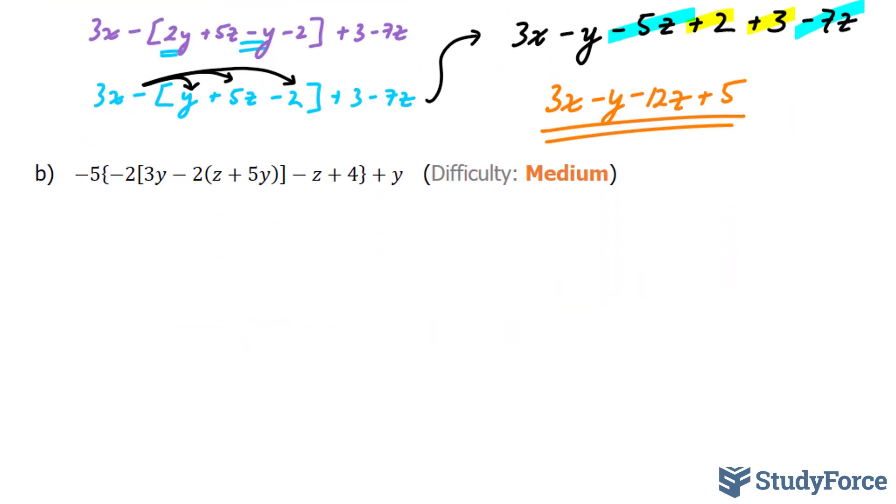Moving on to B. In B, we have curly brackets now, and that tells us that we need to focus on everything found inside of it first.